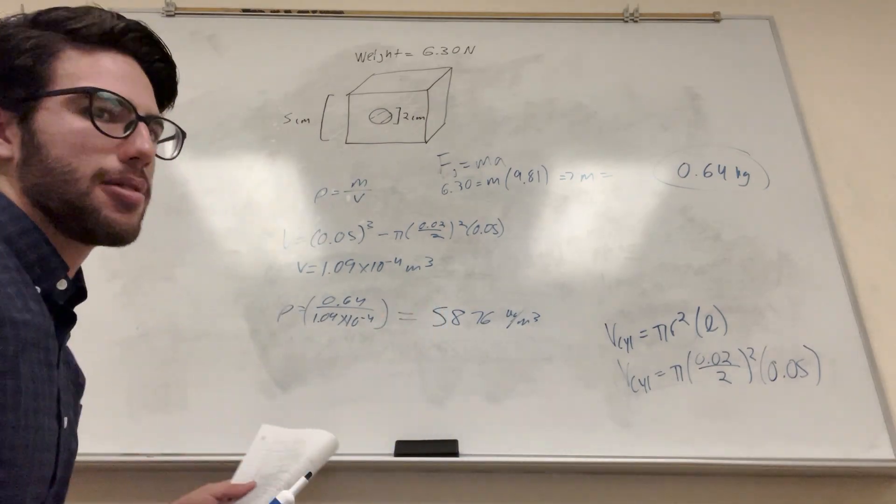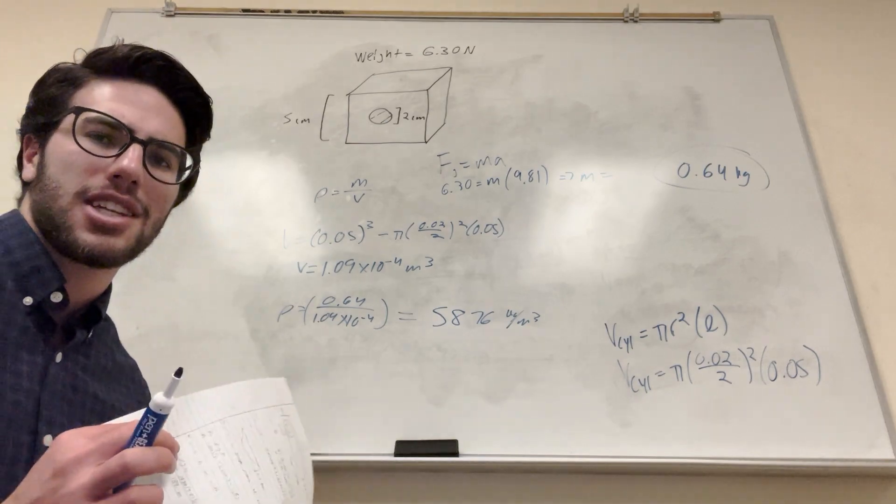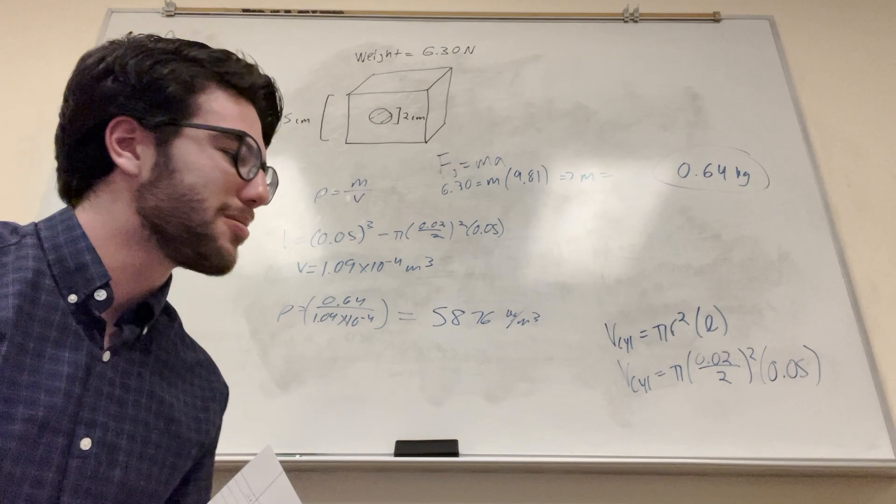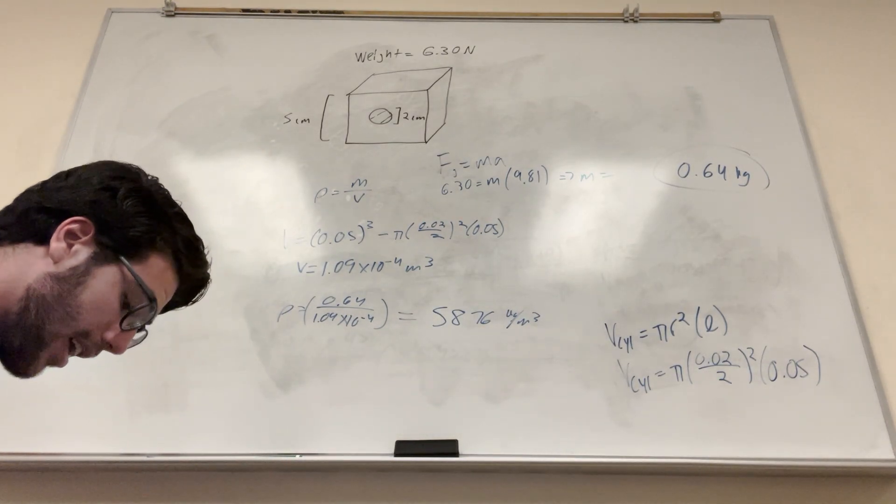And that's a pretty reasonable number for a metal, right? Like water's 1,000. Mercury's like way more than that. So this metal's kind of in between there. Maybe mercury's less than that. I don't know what I'm thinking of, but some metal's very dense. I think gold is way more dense, obviously.